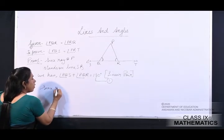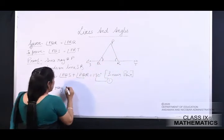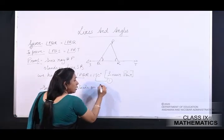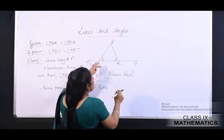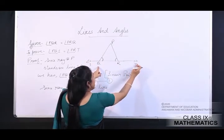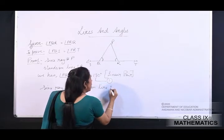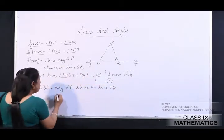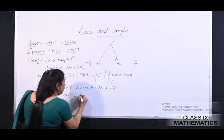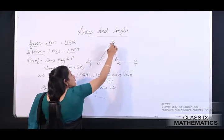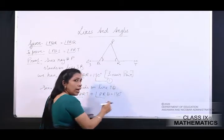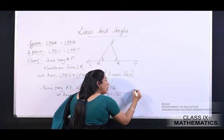Since ray RP stands on line QT, we have angle PRT plus angle PRQ equals 180 degree — linear pair. This is equation number two.